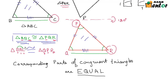These are the corresponding sides, or corresponding parts, of two congruent triangles.